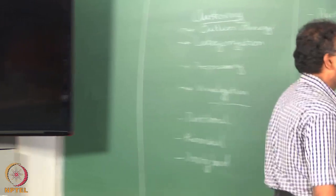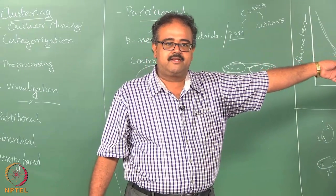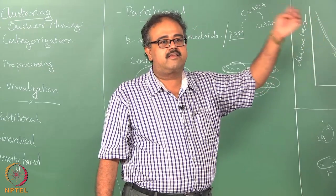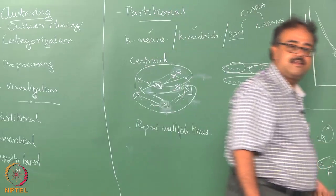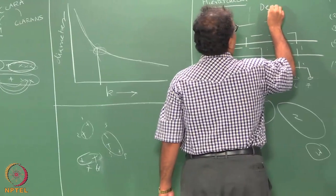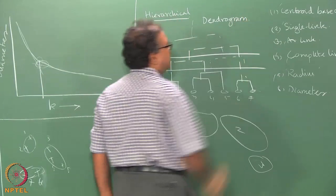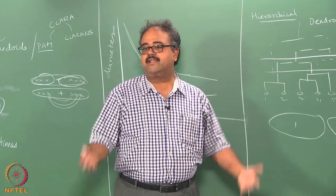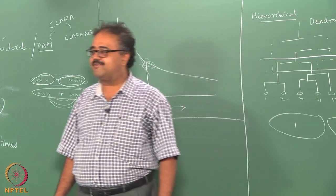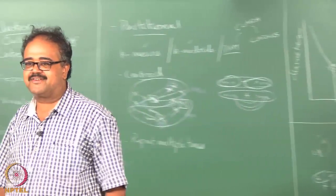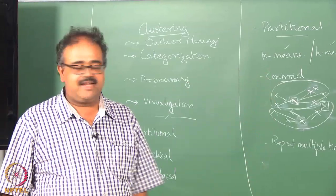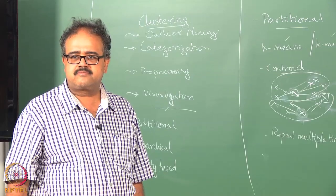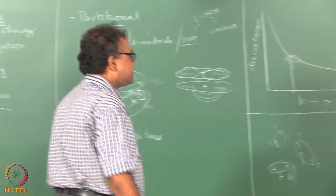Where is the tree here? That figure I drew - there is a tree - but in the hierarchical clustering literature it is not called a tree, it is called a dendrogram. A dendrogram means tree - they just went to a different language and pulled out the word. So a dendrogram is a tree.